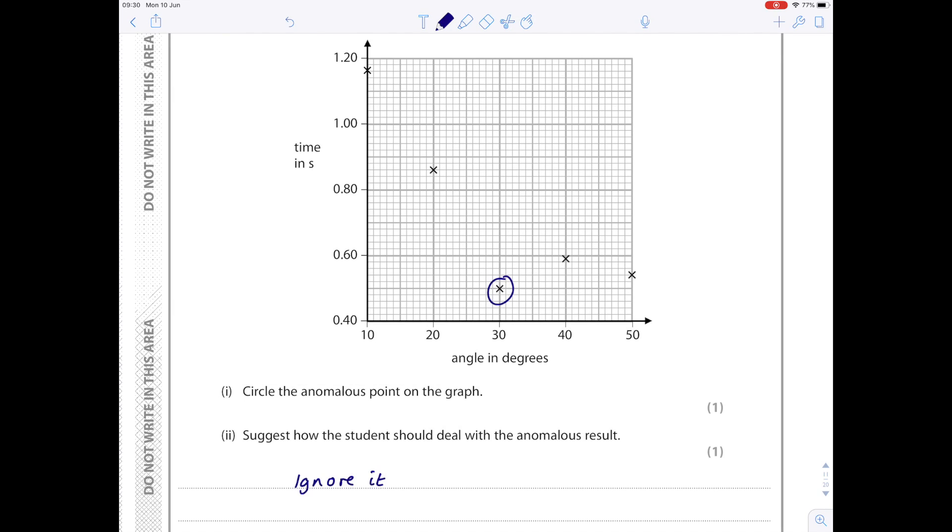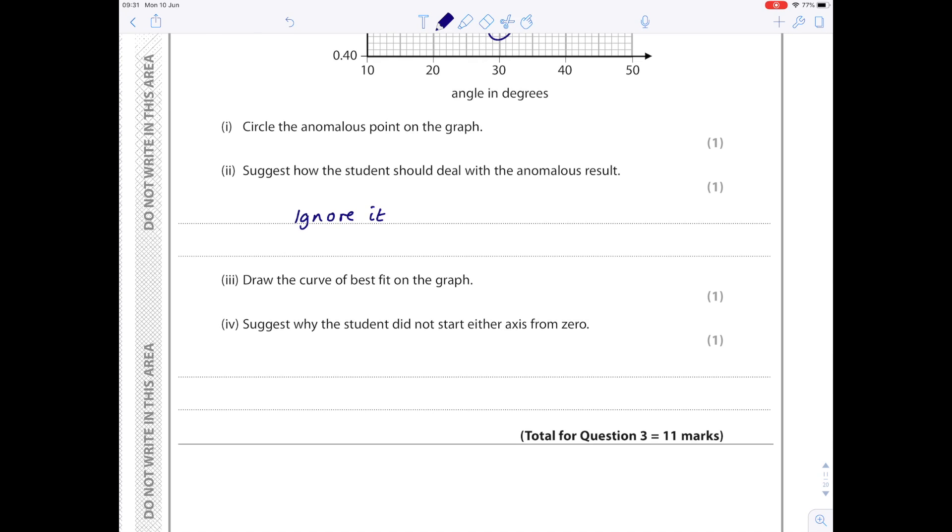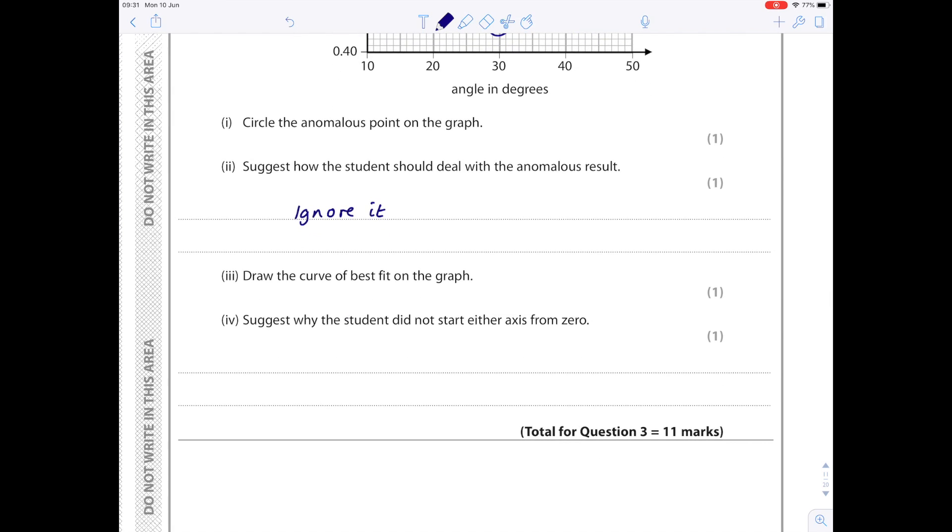Draw the curve of best fit on the graph. You're going to have to do this using a smooth curve because they haven't told you to join it point by point. I'll try my best to do that neatly. I think that's as good as I'm going to get on the iPad. Suggest why the student did not start either axis from zero. That's because the time would never be zero, and also if you look at the graph paper, it means that you occupy as much of that graph paper as possible.